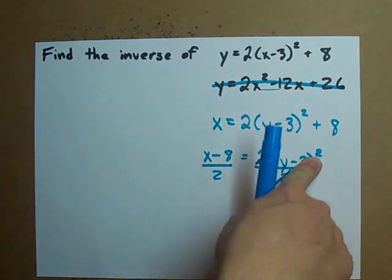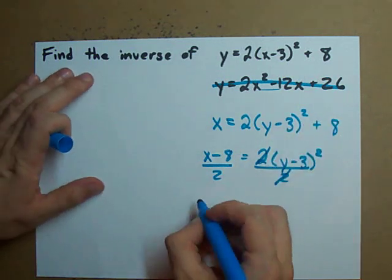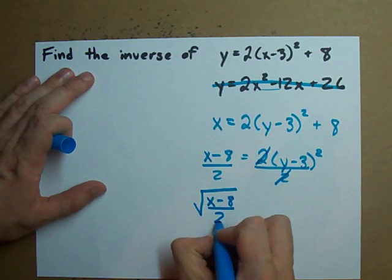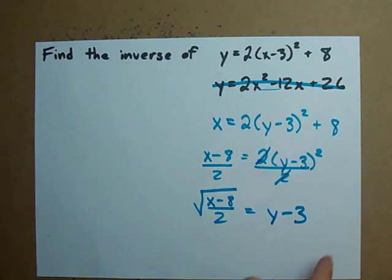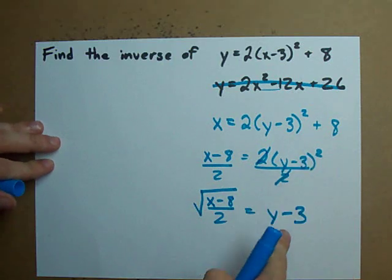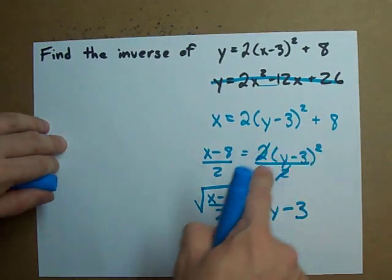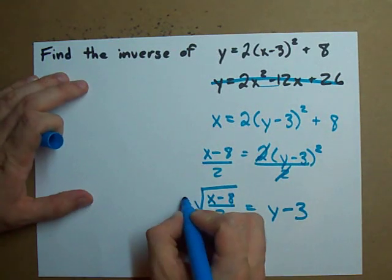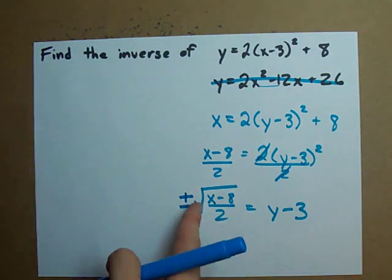Now we have to get rid of the square. How do we undo square? By taking the square root of both sides. See, we got rid of the square on the right and took the square root of the left because the square root cancelled out the square over here.